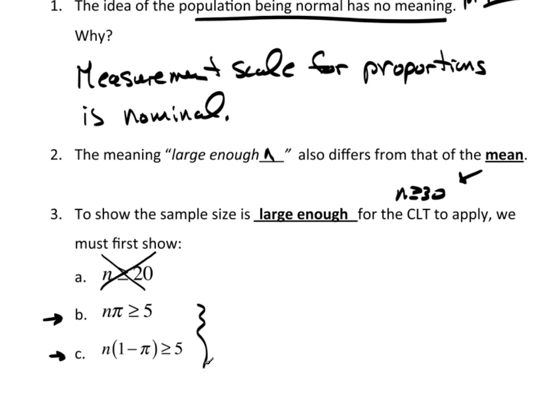If you have these satisfied, then you can apply the central limit theorem and say that p hat is reasonably distributed normal with a mean equal to pi and a variance equal to pi, 1 minus pi divided by n.